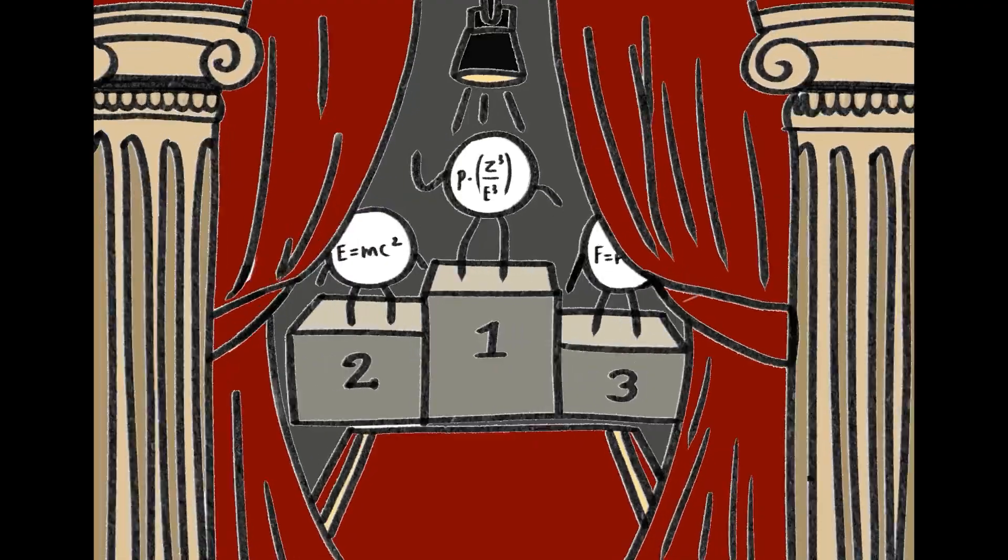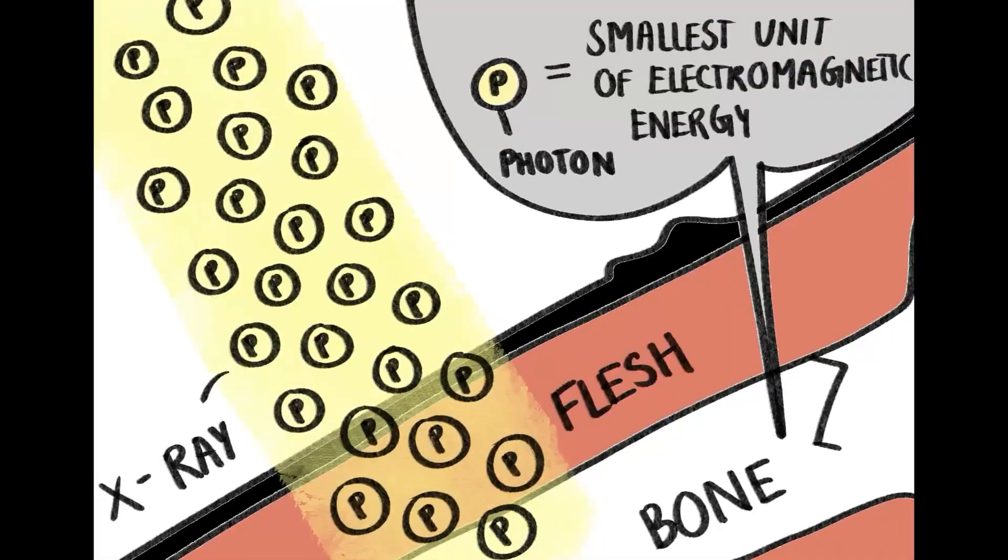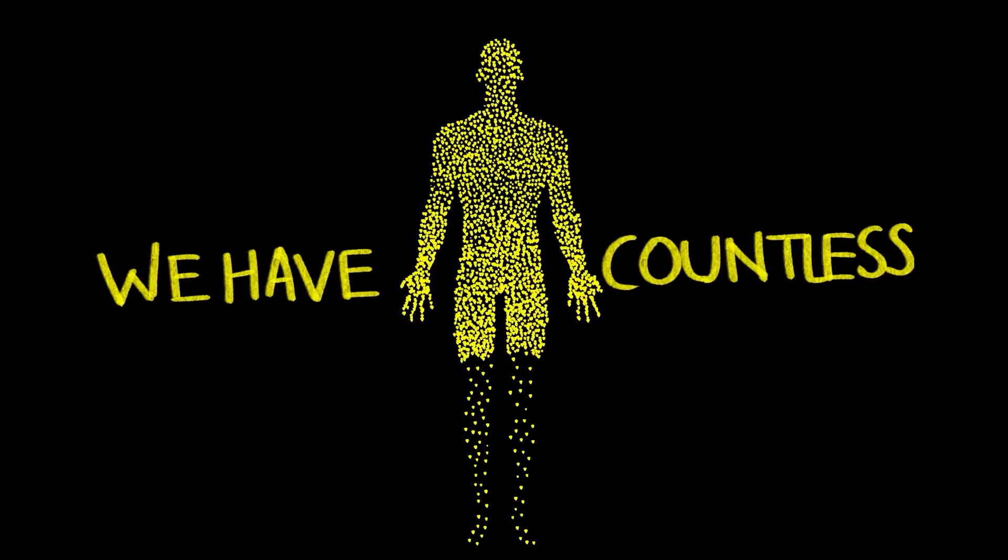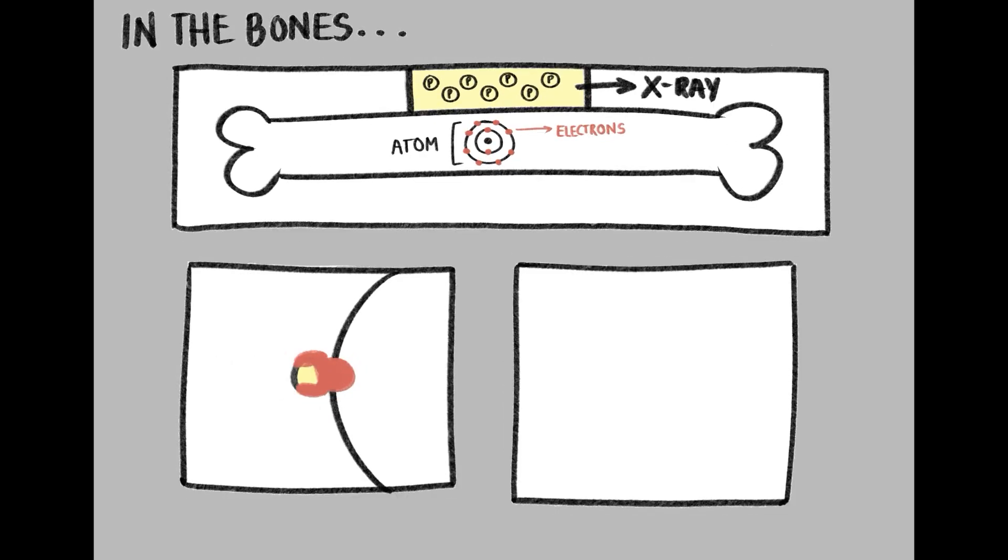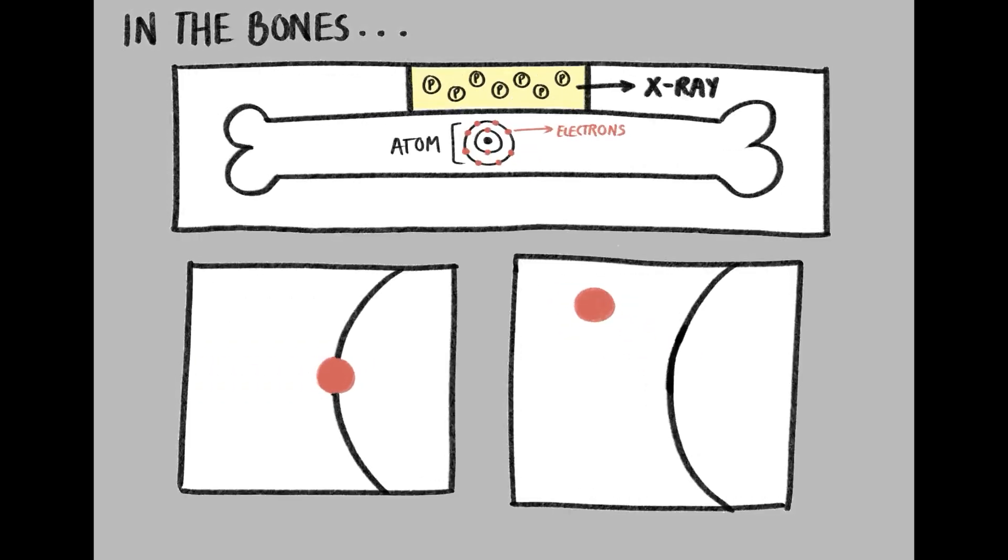This is where the photoelectric effect steals the show. A photon, the smallest unit of electromagnetic energy, travels onto, let's say, a broken arm. Within our arms and bones, we have countless atoms. In the bones, the photon gets absorbed by an inner shell electron and the photoelectron gets ejected out of the shell.